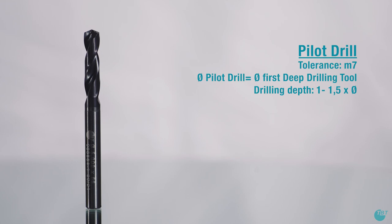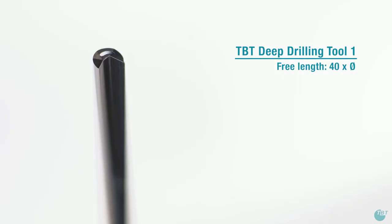The drilling depth of the pilot hole should be between 1 and 1.5 times diameter. The first TBT single lip deep hole drill to be used must not exceed a free length of 40 times D.